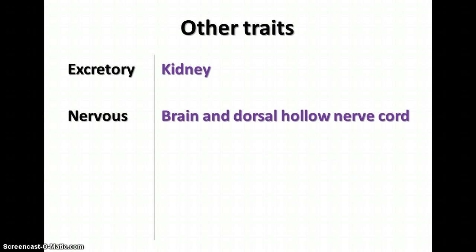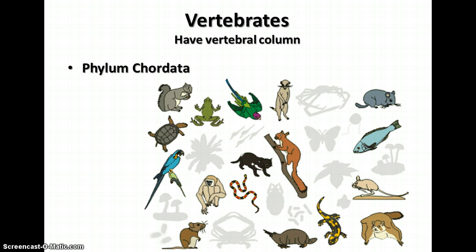Other traits that chordates have include kidneys for excretory function — very efficient filters of nitrogen waste and other compounds from the bloodstream — and a brain connected to the dorsal hollow nerve cord are important structures. The main part of Phylum Chordata is the vertebrates, which have a vertebral column. There will be more notes on the groups of vertebrates, which include fishes, amphibians, reptiles, birds, and mammals.